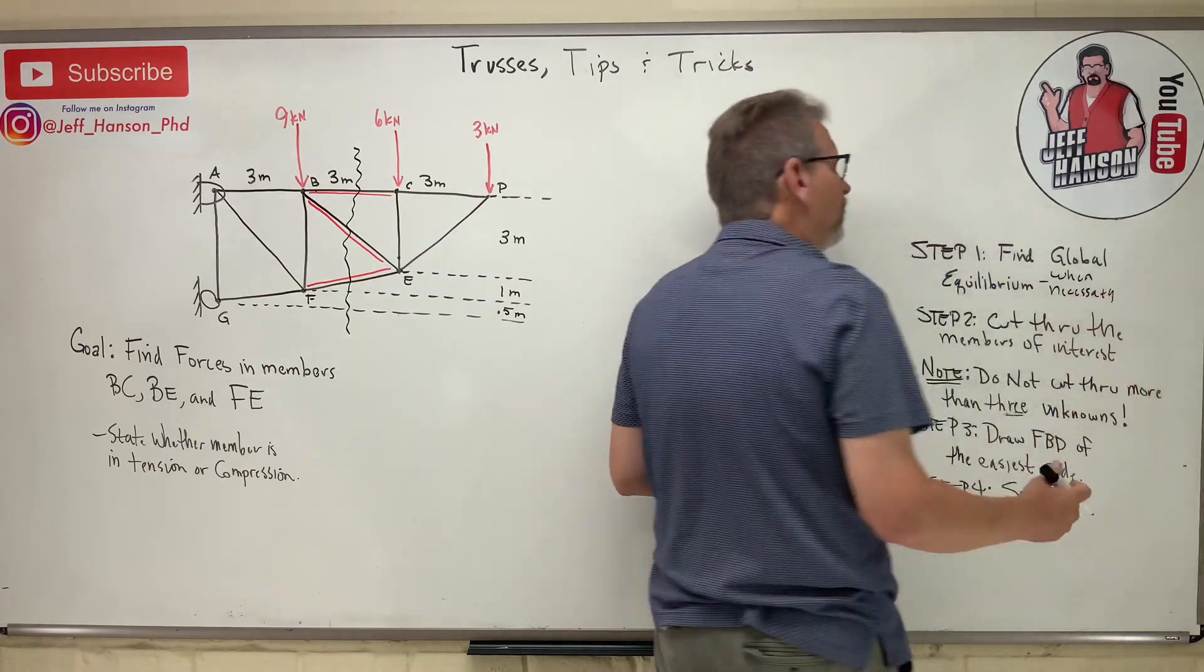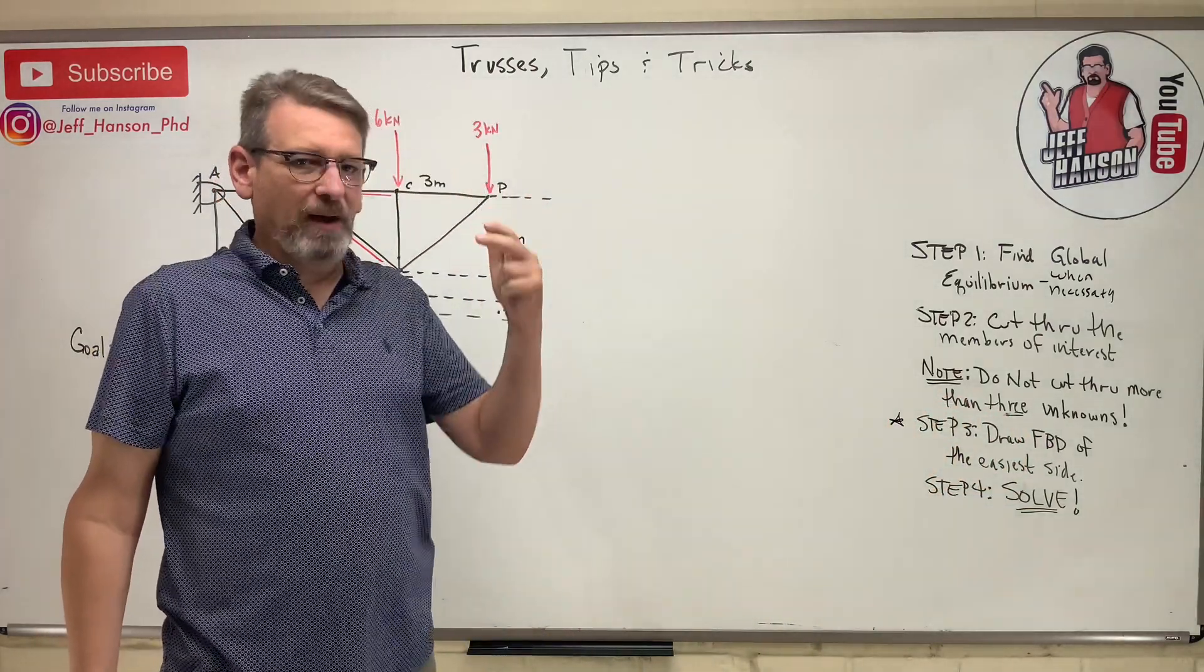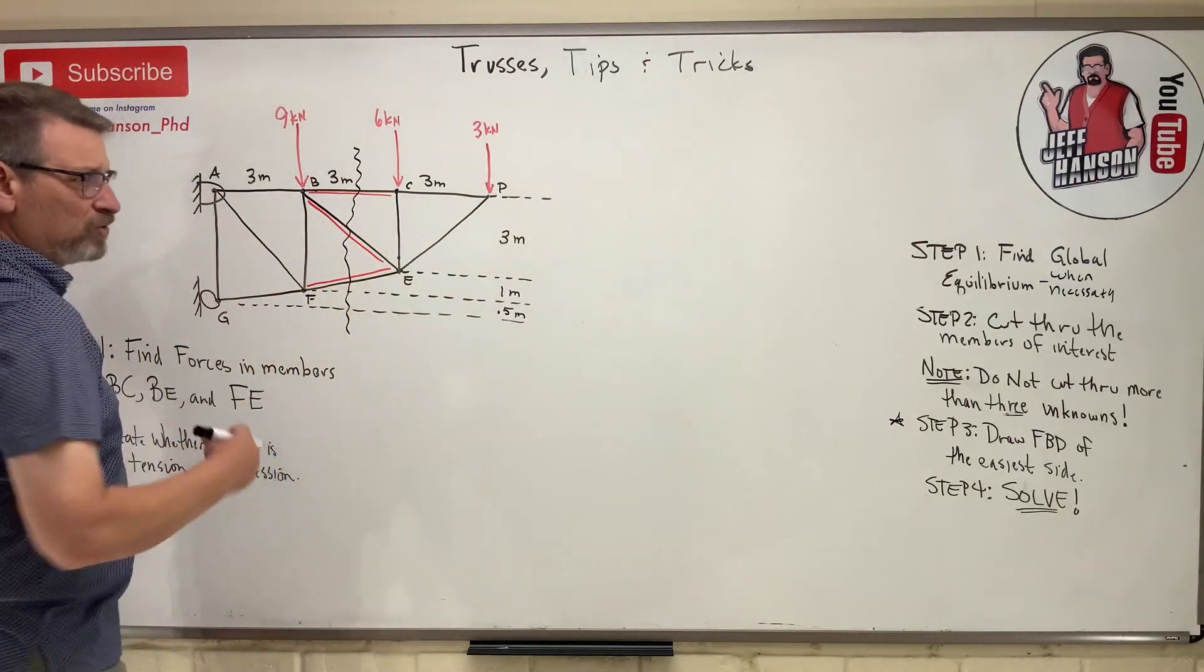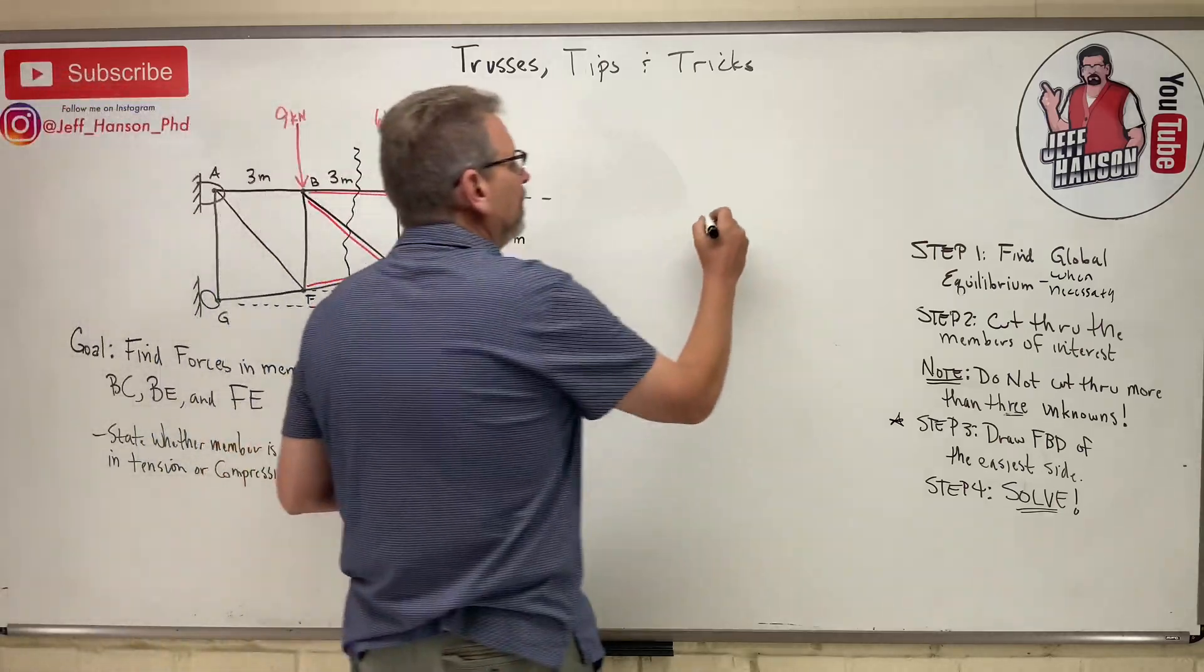So step one should say find global equilibrium when necessary. Yeah, students are like, okay, I memorized your recipe and I'm going to do it on every problem. Think with your brain here. If I do this side over here, I don't have to do step one. I can skip that. That's tip number one. So here we go.